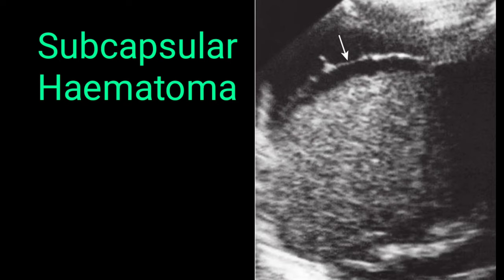The importance of ultrasound in accident and emergency cannot be denied — it is the easiest way to detect intra-abdominal bleeding or rupture of any organ. On this image you can appreciate subcapsular hematoma of the spleen. The splenic parenchyma appears heterogeneous, and you can see a crescent-shaped hyperechoic line with an anechoic lesion underneath indicated by the white arrow — this is the subcapsular hematoma.